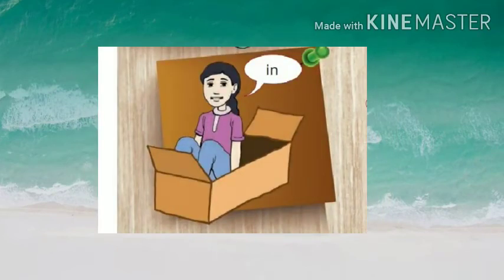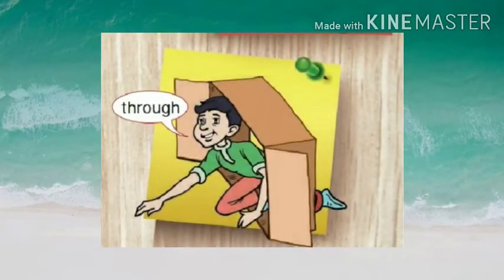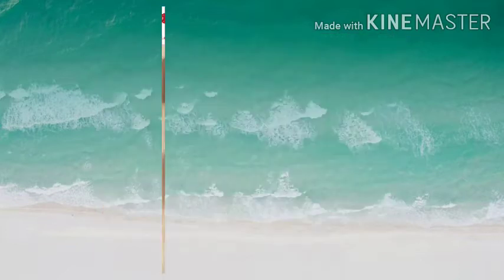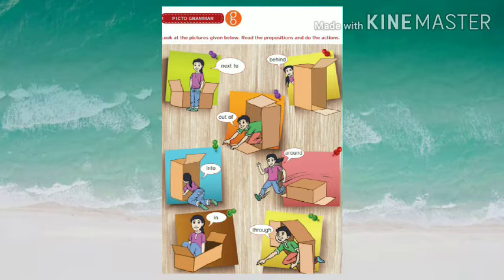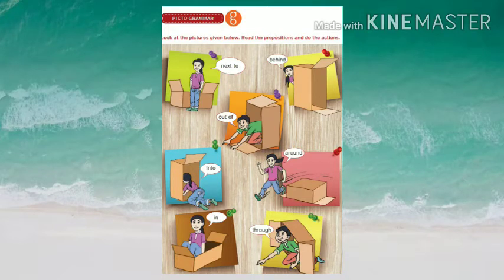In the next picture, the girl went inside and started to sit in the box, so we use the preposition 'in' — she sits in the box, meaning inside. In the last picture, the boy is coming through the box; the cardboard box has a hole and from one side the boy is coming through that hole to the other side, so we use the preposition 'through'. When you see all these pictures, the actions refer to the prepositions: next to, behind, out of, into, around, in, and through. From this, we understand that prepositions are also used to mention a particular action.